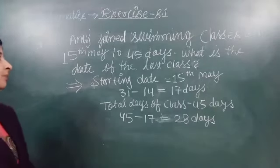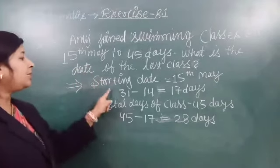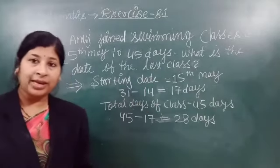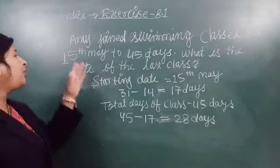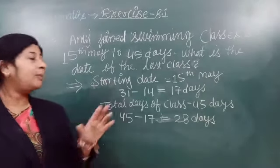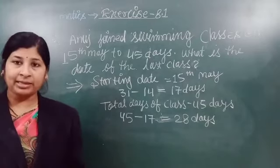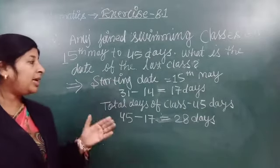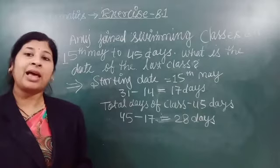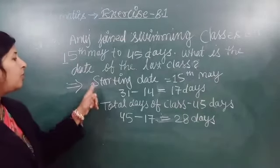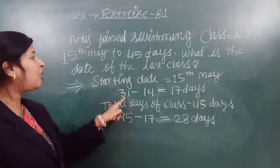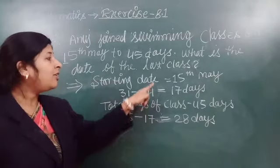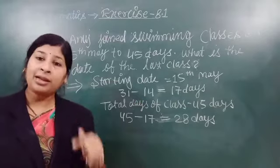So we find it. Firstly, the starting date — when does the class start? 15th May, class starts. So we reduce all days before 15th May. We will see how many days in May month he attended class. How many days in the month of May? 31 days. And we minus 14, because on 15th he had already joined the class.